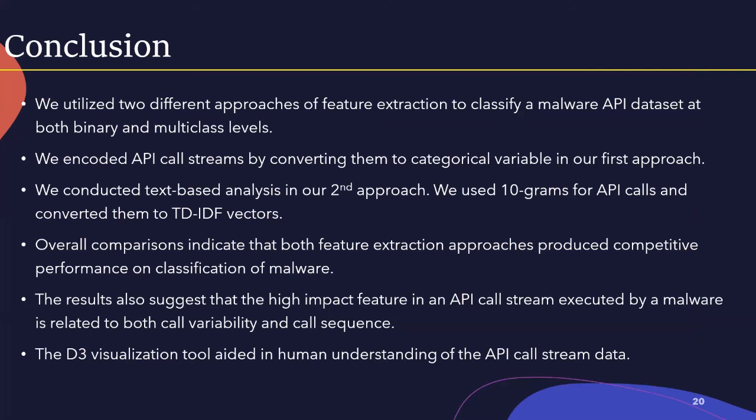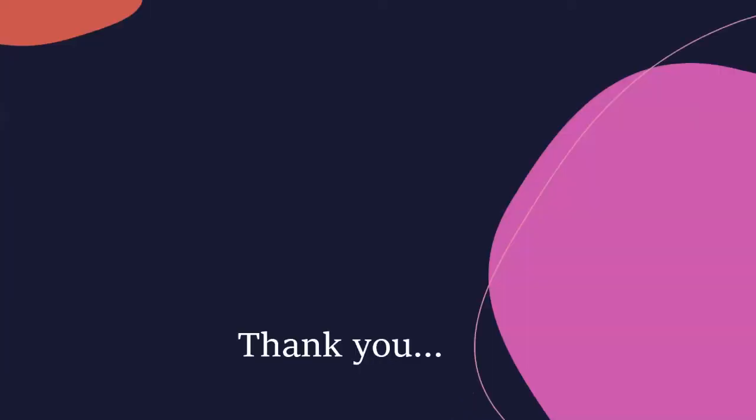To summarize, we utilized two different approaches to classify malware at both binary and multi-class levels. We encoded API call streams by converting them to categorical variables and TF-IDF vectors. The overall comparison indicates that both feature extraction approaches produced competitive performance on malware classification. The results also suggest that high-impact features in an API call stream are related to both call variability and call sequence. The D3 visualization tool aided in human understanding of the API call stream data. Thank you for listening — any questions or suggestions are welcome.